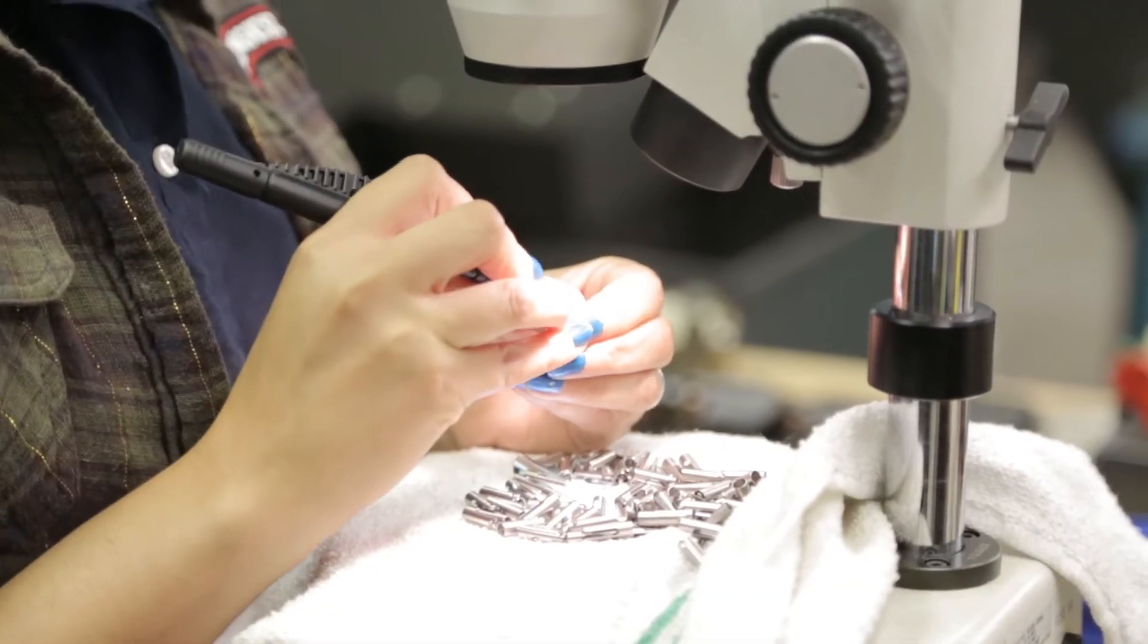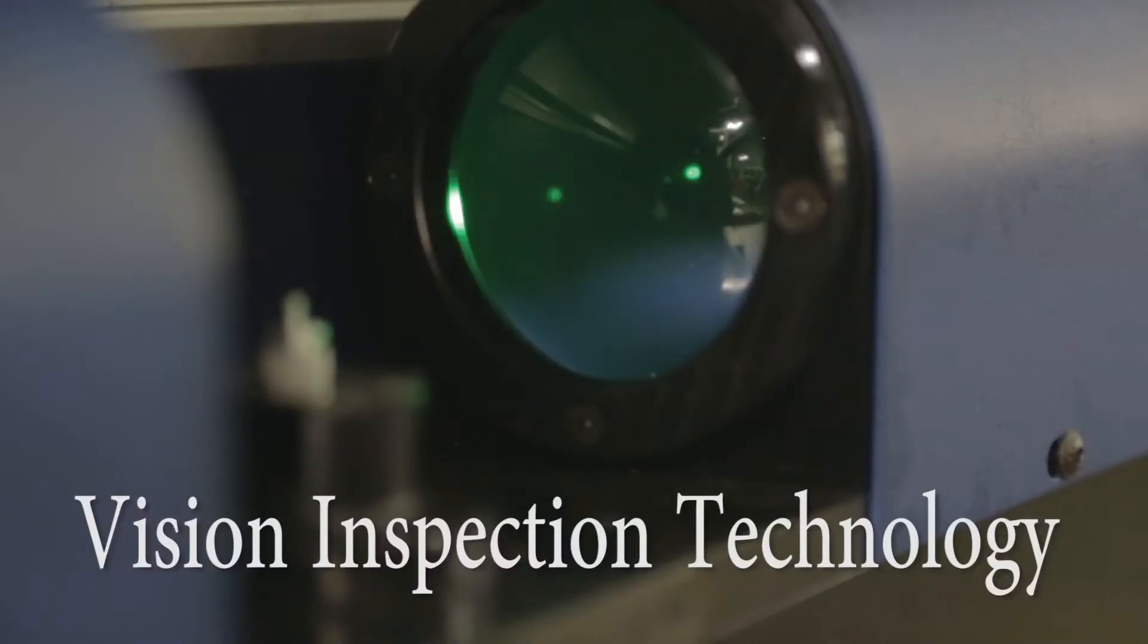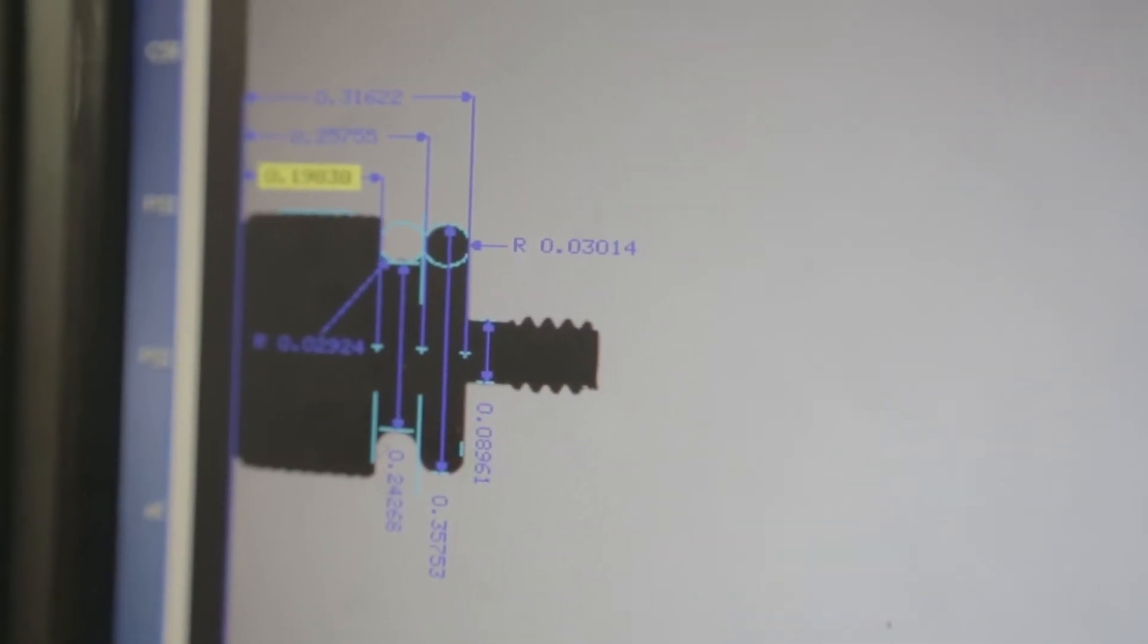So, how do we stay on top of the quality control? As an example, we measure these parts by using vision inspection technology. The system can be programmed to measure every detail of the part within a thousandth of an inch.